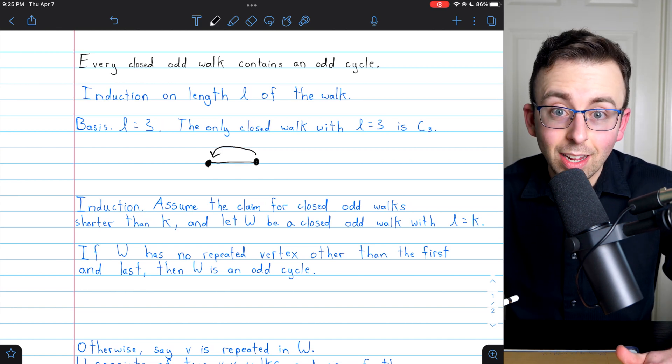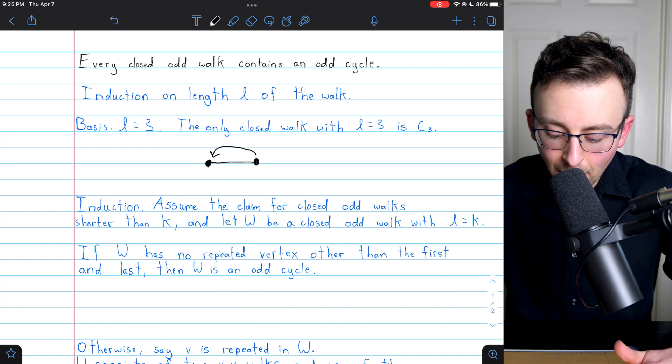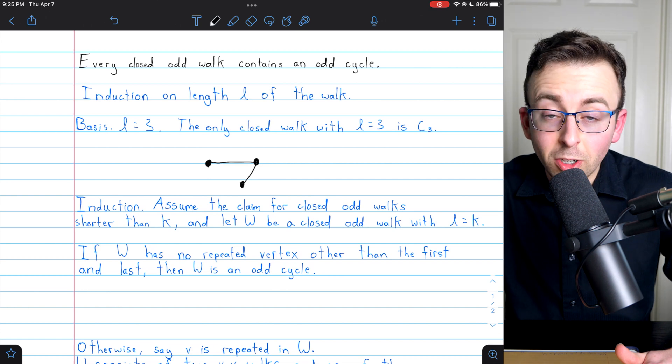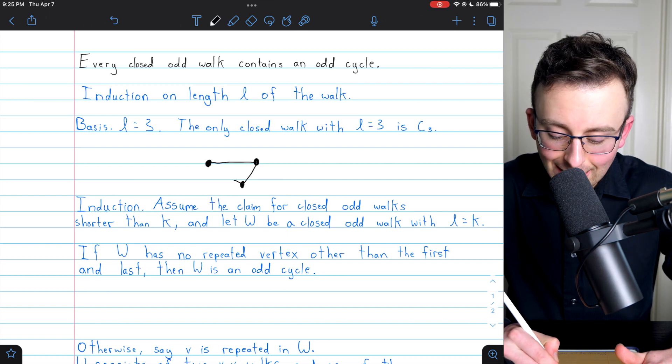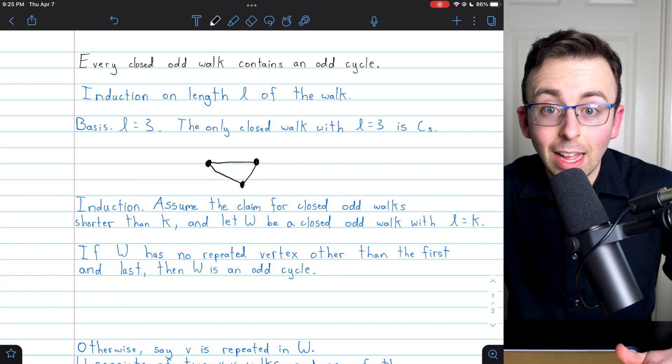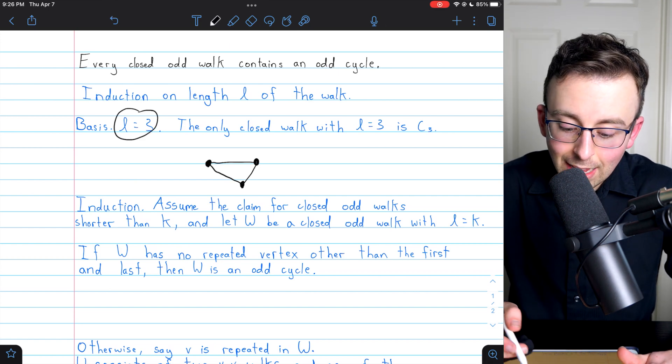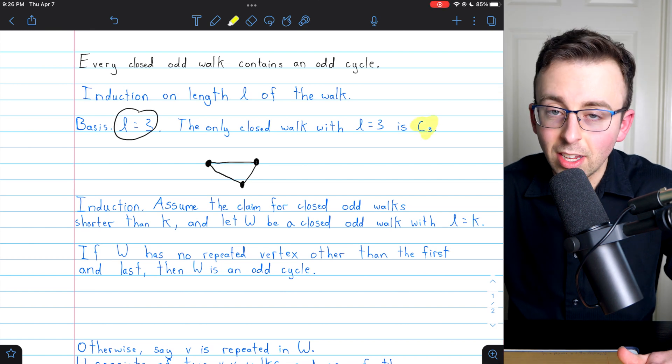And we're saying that we have an odd walk. So we have to go to at least one other vertex. And then in order to have a length of three, we have to immediately return to the starting point. And so the only closed odd walk of that smallest length three is the cycle graph C3.